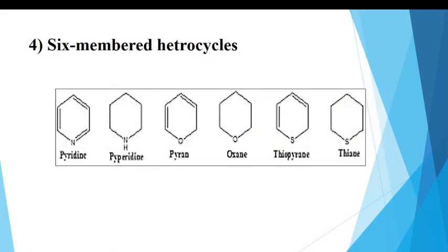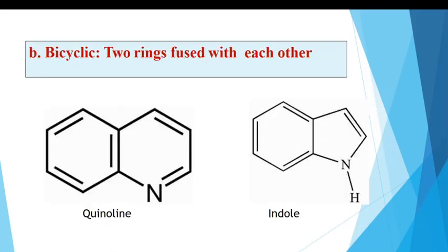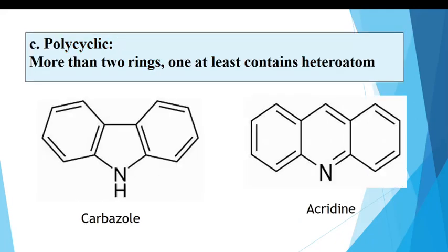Another classification is based on two rings fused with each other — these are bicyclic compounds. Examples are quinoline and indole. The third type is polycyclic compounds, in which more than two rings are attached with each other and at least one ring contains a heteroatom. Examples of this type are carbazole and acridine.